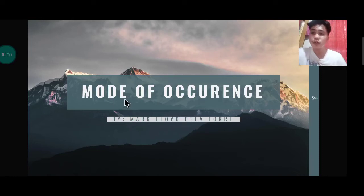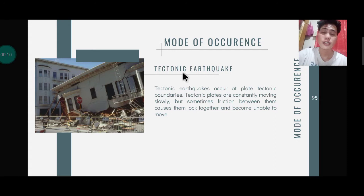Good morning everyone. Today we're going to talk about the mode of occurrence of an earthquake. First is the tectonic earthquake. Tectonic earthquakes occur at plate tectonic boundaries. Tectonic plates are constantly moving slowly, but sometimes friction between them causes them to lock together and become unable to move.